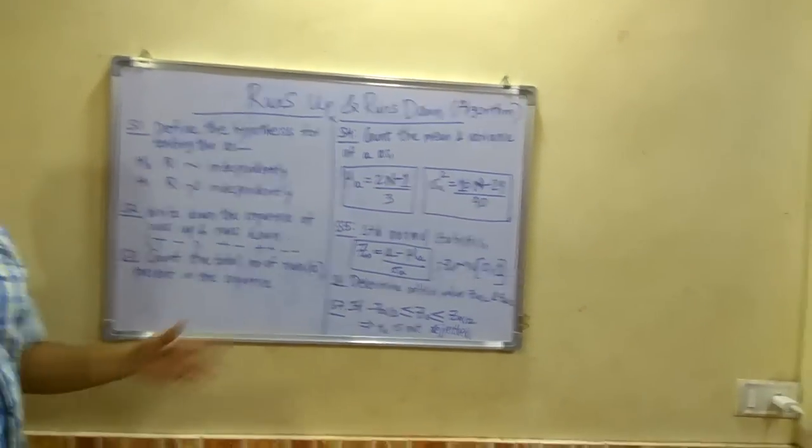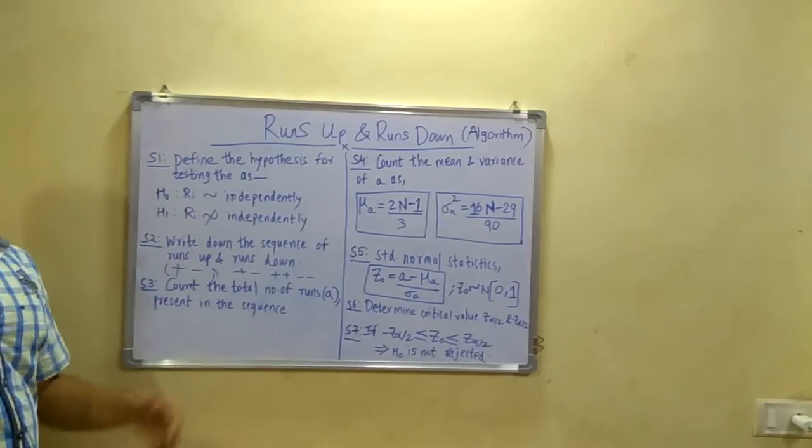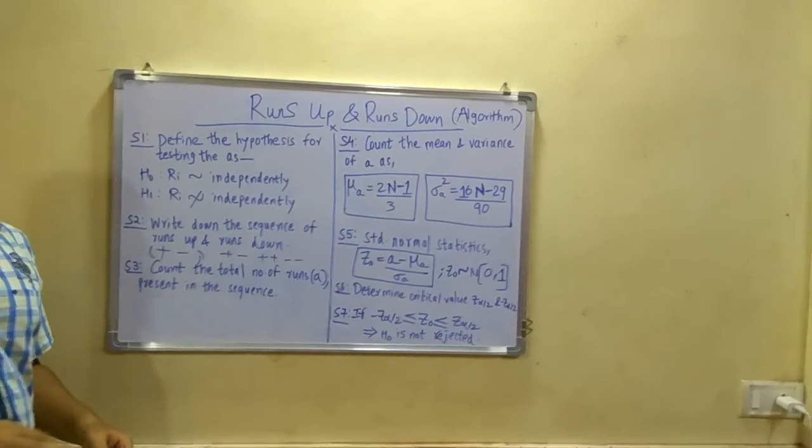Next you have to count the total number of runs, that is the A, total number of plus or minus are present.